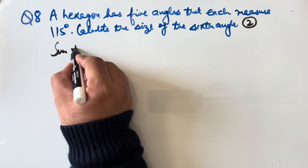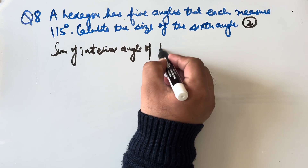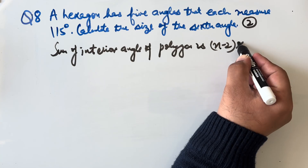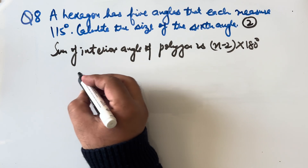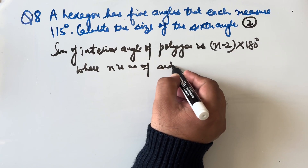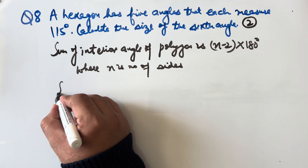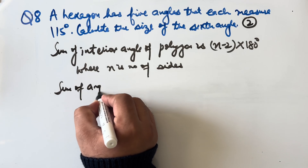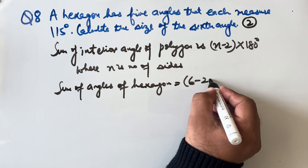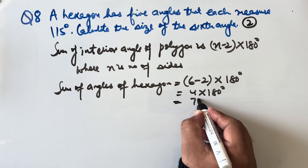The sum of interior angles of a polygon is (n − 2) × 180°, where n is the number of sides. For a hexagon, n = 6, so the total sum of angles = (6 − 2) × 180° = 4 × 180° = 720°.